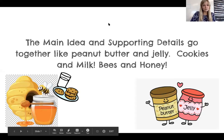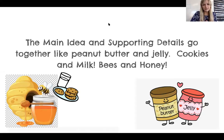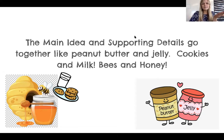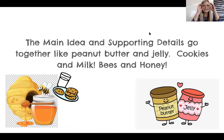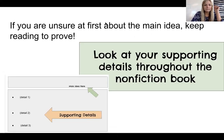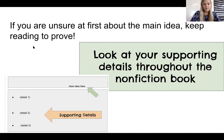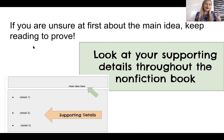The main idea and supporting details go together like peanut butter and jelly, cookies and milk, or bees and honey — you need the two together. The main idea is what all of the supporting details are generally about. The supporting details are just a little more specific — it's like zooming in. If you are unsure about your main idea at first, these supporting details can help prove it. If you keep reading, you say, okay, all these really important supporting details in my book are about this main idea.